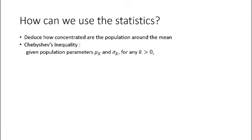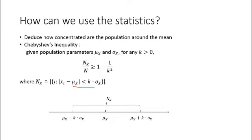Given population parameters mean μ_X and standard deviation σ_X, and any positive k, we have the following Chebyshev's inequality, which gives us a lower bound on the proportion of data that lie around the mean within k times standard deviation. It can be easily illustrated through this figure. So, this is the mean μ_X, and this interval is k times standard deviation around the mean. So, what we are focusing on is the proportion of data that lie in this interval. And Chebyshev's inequality gives us a lower bound on this proportion.